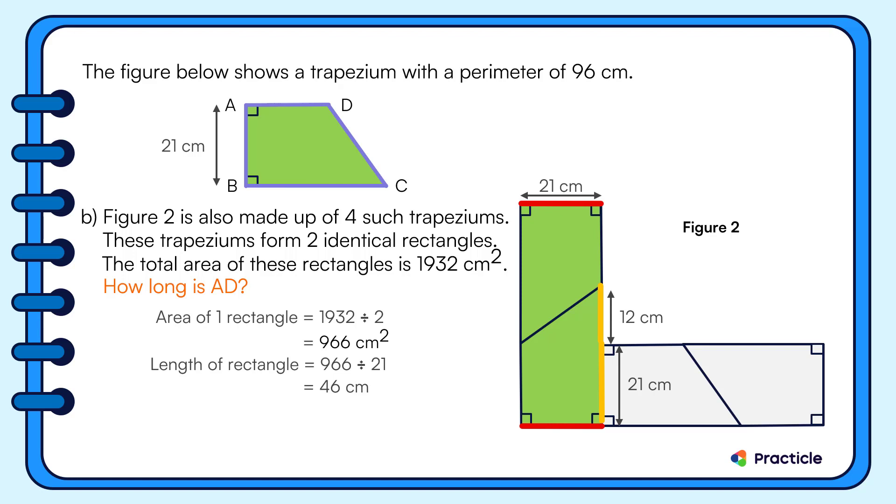And now for the final moment of truth. Let's find the length of AD by subtracting the length that we know from 46. Did you get 13? AD is 13 cm long.